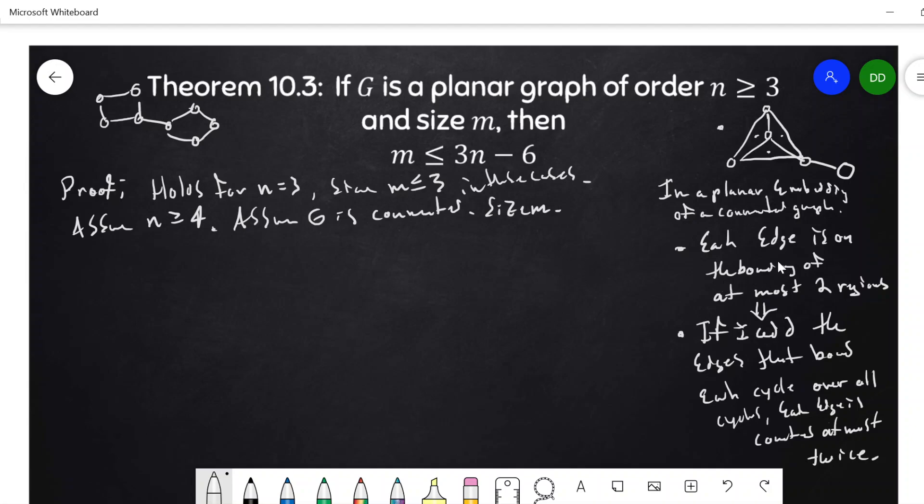And now we're going to start this counting argument, keeping in mind the Euler identity. So keep in mind that n minus m plus r is equal to two. Now, I want a little bit more notation here. So I'm going to let R1, R2.